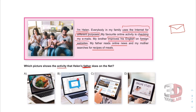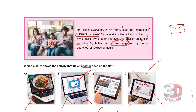Helen's father reads online news. Looking at the options: one is looking for recipes, one is checking emails, one is learning English, and option C is online news. The answer is C.